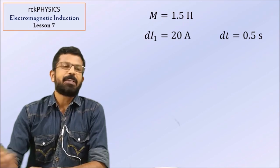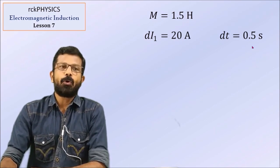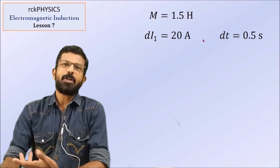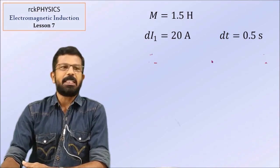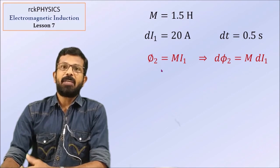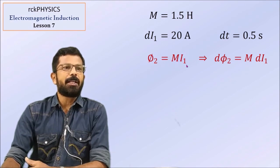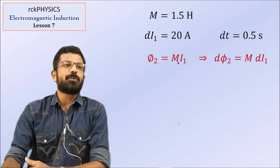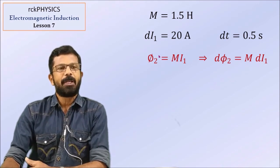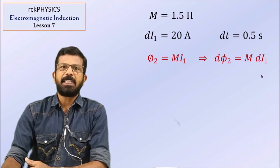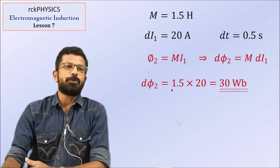Mutual inductance of the pair of coils is 1.5 Henry. Change in current in coil 1, Di1, is 20 ampere. The time required for that change, Dt, is 0.5 second. Flux linked with the second coil, phi2, is proportional to current in the first coil: phi2 equals M times I1. So the change in flux linked with coil 2, D phi2, equals M into Di1. Substituting the values, D phi2 equals 30 Weber.